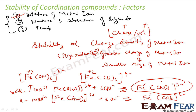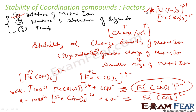Now considering size: if charge is the same, the smaller metal ion is more stable. Comparing Ni(Tn)₃³⁺ and Fe(Tn)₃³⁺, both with +3 charge, Ni is more stable because nickel is slightly smaller than iron. So, if the metals have the same charge, the one with the smaller volume has higher charge density and is more stable.